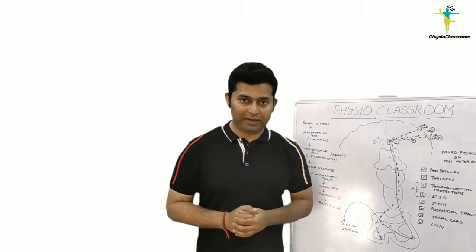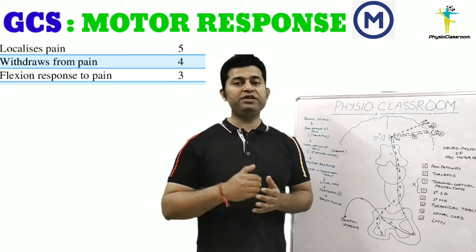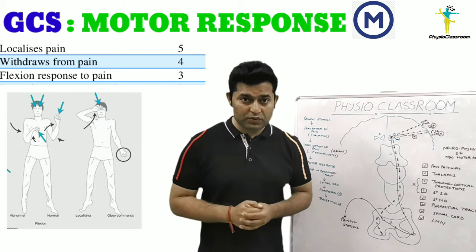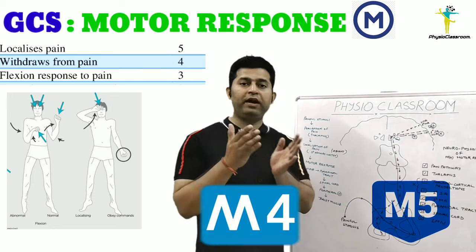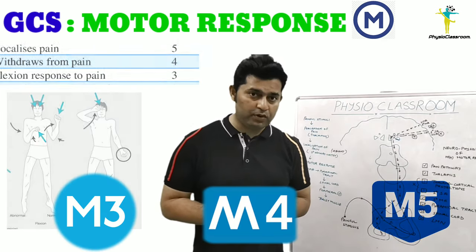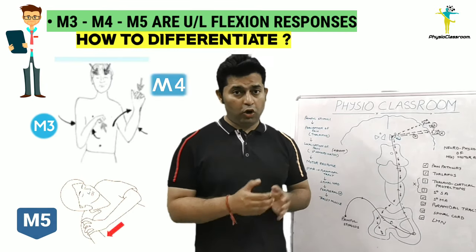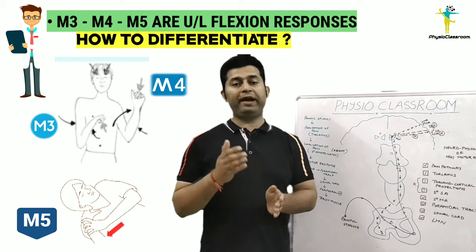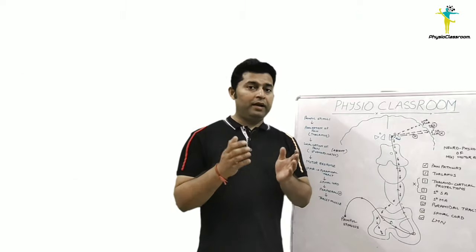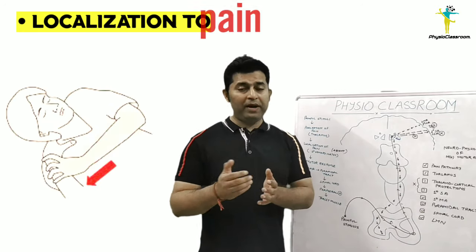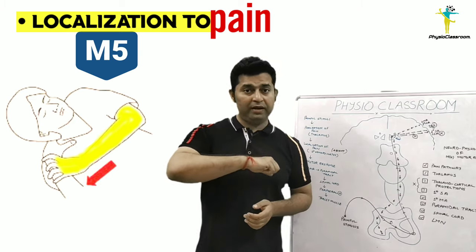Before we move ahead, let's first quickly discuss the main differentiating points by which a physiotherapy student can differentiate between an M5, M4, and M3 motor response. The reason I want to emphasize this is that all three motor responses — M5, M4, and M3 — are characterized by upper limb flexion responses.